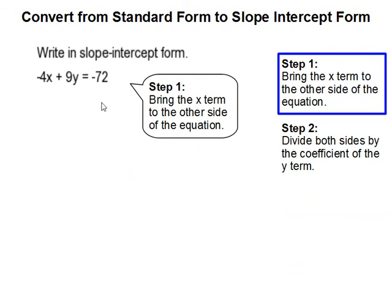So, our slope-intercept equation, y is by itself, so we'll bring the negative 4x over. And we do that by adding 4x to both sides of the equation.